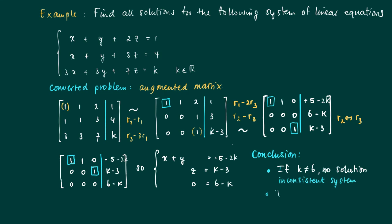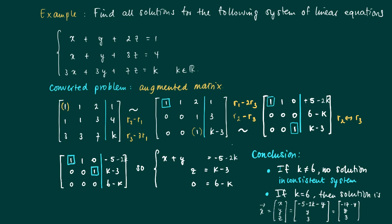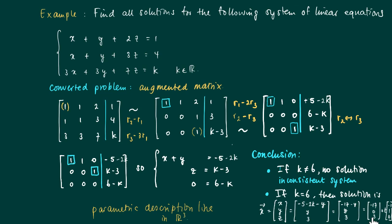If k equals 6, we obtain a more general solution. The solution vector x has three components x, y, z: z is fixed, but y is not fixed and can be chosen arbitrarily. We end up with a vector that splits as (minus 17, 0, 3) plus t times (minus 1, 1, 0), which is a parametric description of a line. Here (minus 17, 0, 3) is the support vector and (minus 1, 1, 0) is the direction vector.